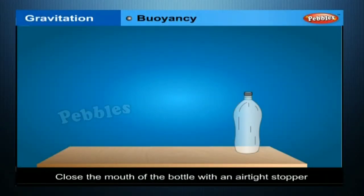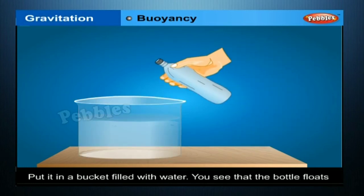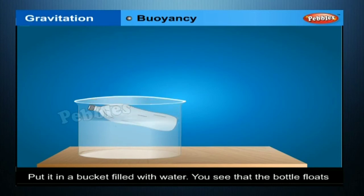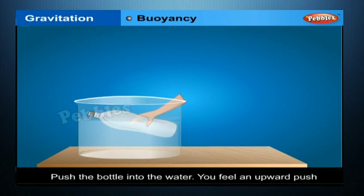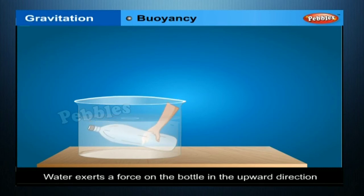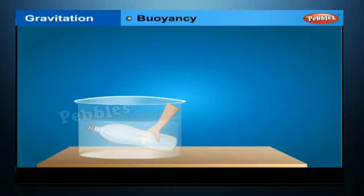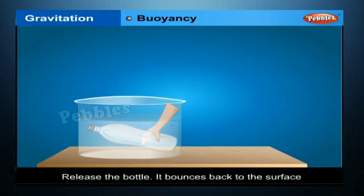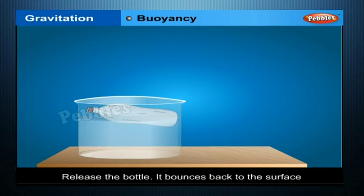Buoyancy: take an empty plastic bottle, close it with an airtight stopper, and put it in a bucket filled with water. The bottle floats. If you push the bottle into the water, you feel an upward push, and it becomes harder to push it deeper. This indicates that water exerts pressure on the bottle in the upward direction, and this force increases as the bottle is pushed deeper until it is completely immersed.